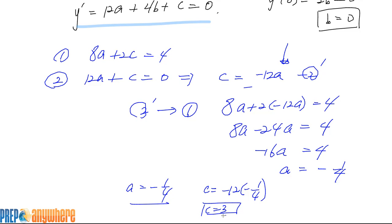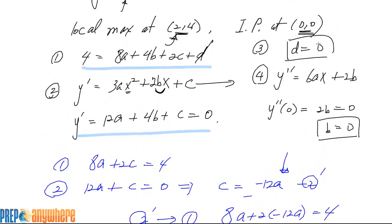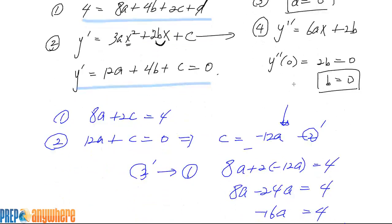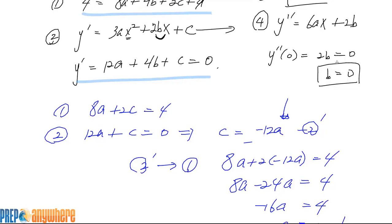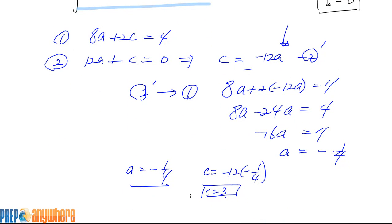So a is this, here's c, and b and d are 0. So the question asks for a, b, c, d, and we have all of them. B and d are 0, and there are c and a.